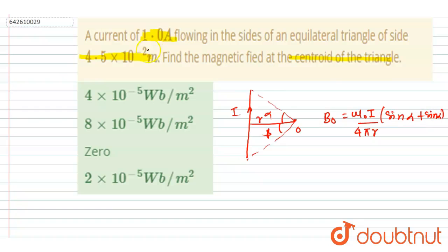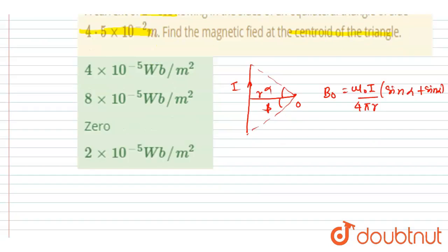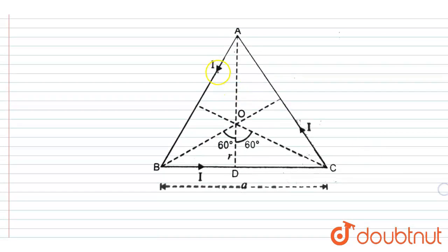So if you can see here, there are three wires, right? So if you see, the figure will be like this: the three wires AB, BC, and CA. So if you see the direction of magnetic field because